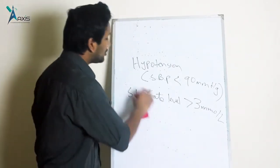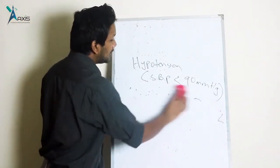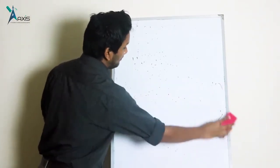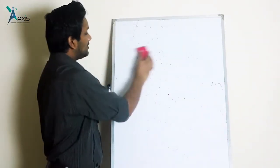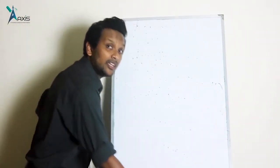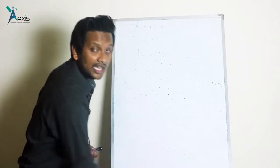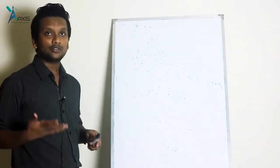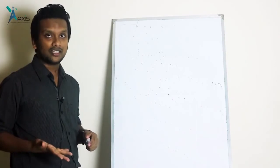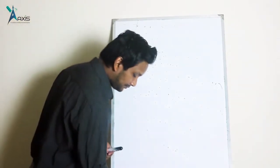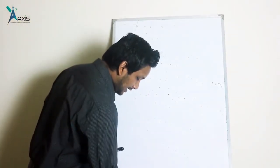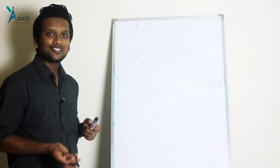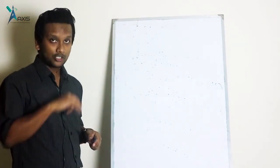Once hypotension will not be corrected by fluid challenge, then the patient requires vasopressor support. Severe sepsis requiring correction of hypotension by vasopressors only — and not responding to intravenous fluid challenge — is called septic shock. So the progression is: severe sepsis with hypotension correctable by fluids, versus septic shock where vasopressors are needed.